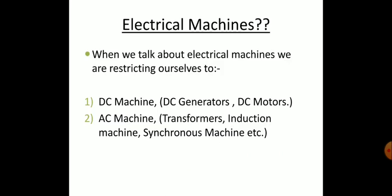Electrical machines may be classified in two general ways. The machines which work on direct current are called DC machines, like DC generator and DC motor. The other type comes under AC machines, which work on alternating current, like transformer, induction machine, and synchronous machine.